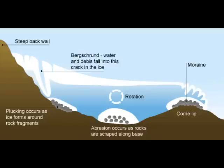Glaciers also erode by abrasion, which is when the rocks and stones embedded in the glacier rub like sandpaper against the bedrock. It leaves behind smooth polished surfaces which may have scratches in them called striations. Striations are carved out by angular debris embedded in the base of the glacier.